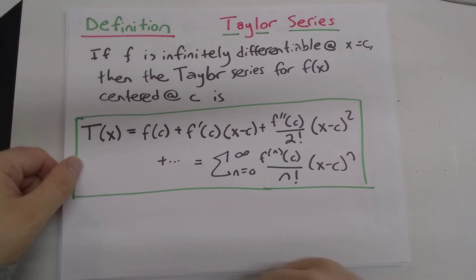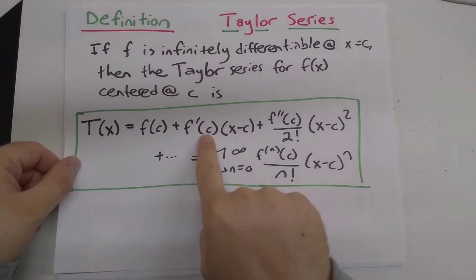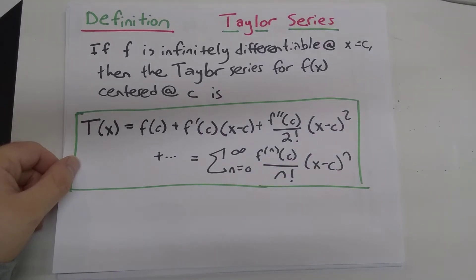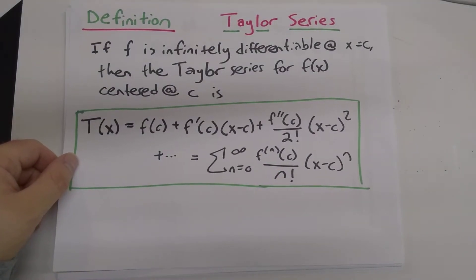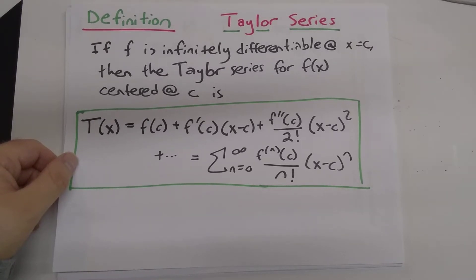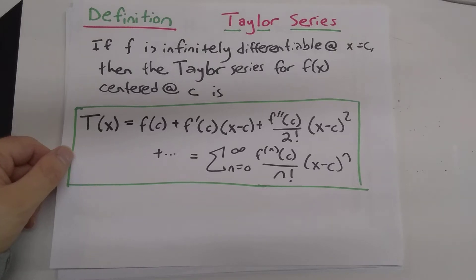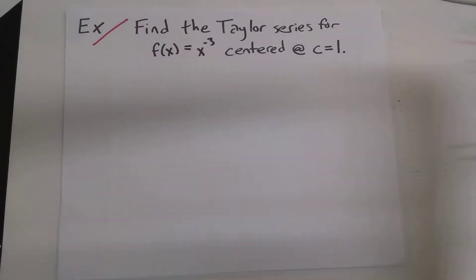And so we know from our definition of Taylor series, we can see we're just going to have to calculate out bunches of derivatives. We need a general formula for the nth derivative here. Plug in c is equal to 1 into those derivatives and write down our series. So let's get to work.